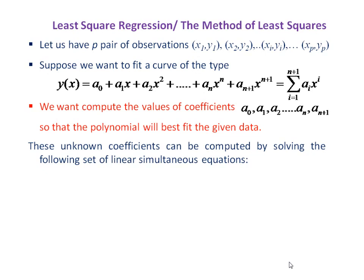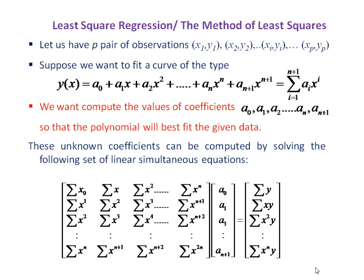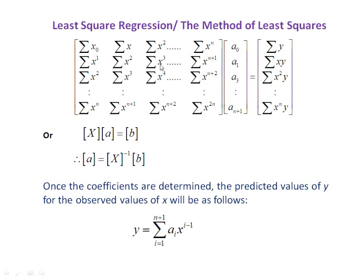These unknown coefficients can be computed by solving a set of linear simultaneous equations written in the form of a matrix equation. The first matrix is denoted by matrix S, the column vector is denoted by matrix A, and the column vector on the right-hand side is denoted by matrix B. We rearrange this matrix equation to get the values of the elements of column vector A, such that matrix A equals matrix X inverse times matrix B.